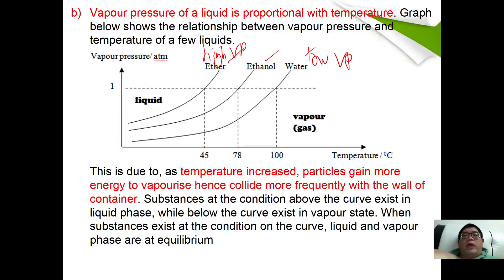While water has the lowest vapor pressure. This is a positively derived curve. This shows that as temperature increases, particles gain more kinetic energy to vaporize, hence collide more frequently with the wall of container. Therefore, vapor pressure increases with the temperature rise.